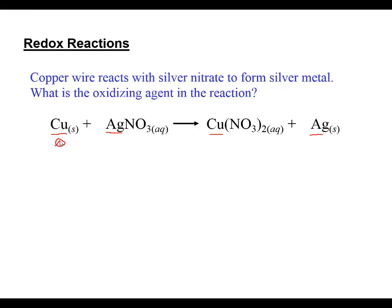Copper, since it's an element, has an oxidation number of zero - it doesn't have a charge and is not an ion. Silver at the end is neutral and not in a compound, so the oxidation number is zero. We begin with silver with a plus one charge and end up with copper with a plus two charge to balance out the two nitrates.